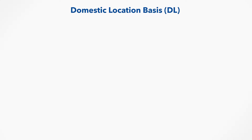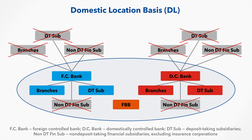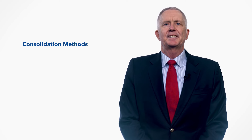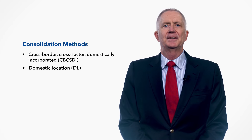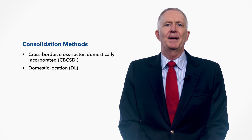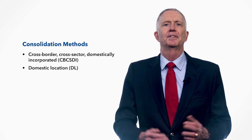Let's now look at how DL consolidation is applied in practice. Note that only units within the big oval, which represents the domestic economy, are included in the consolidation. Within the domestic economy, the non-deposit taker subsidiaries of both domestically controlled and foreign controlled deposit takers are excluded from the consolidation. This is because there is no cross-sector consolidation in DL. The 2019 FSI's guide focuses on the CBCSDI and DL consolidation methods. However, there are other consolidation methods that countries, depending on their specific circumstance, may opt to use instead.